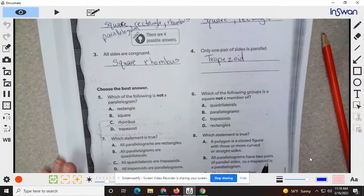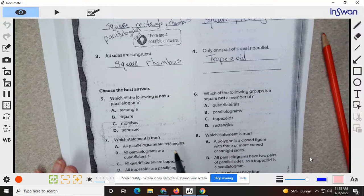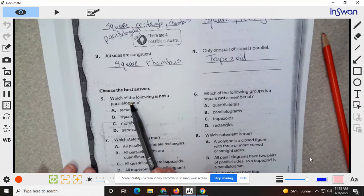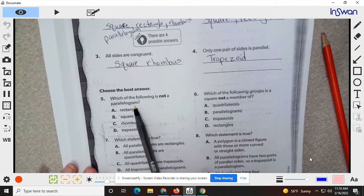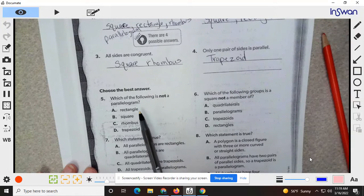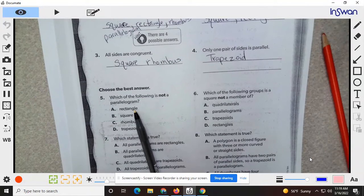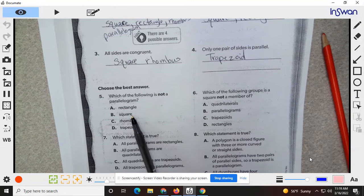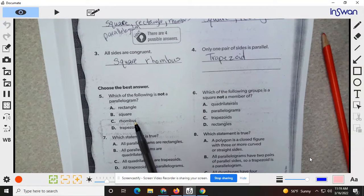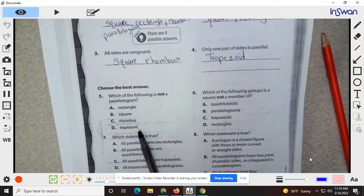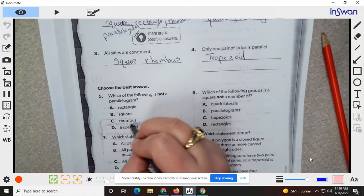Okay. Which of the following is not a parallelogram? Okay. This is a quad with four opposite sides parallel. Is a quad with one set parallel, is a quad with one set parallel sides.